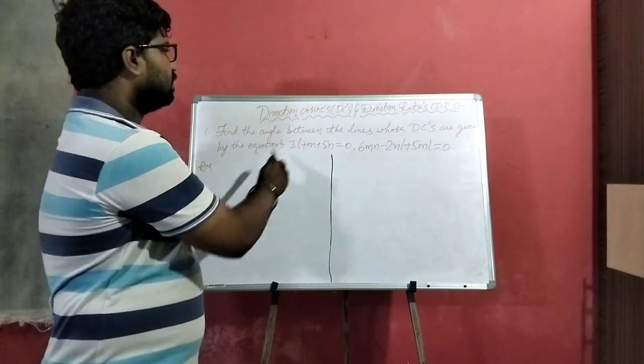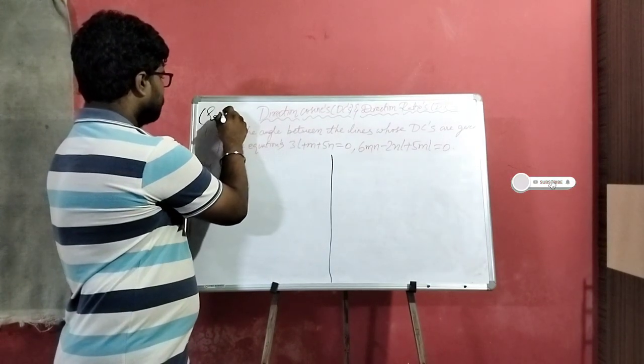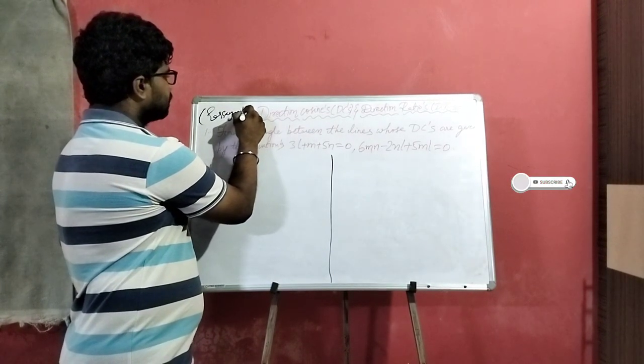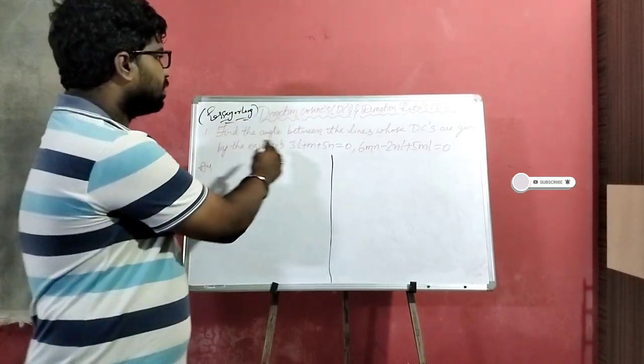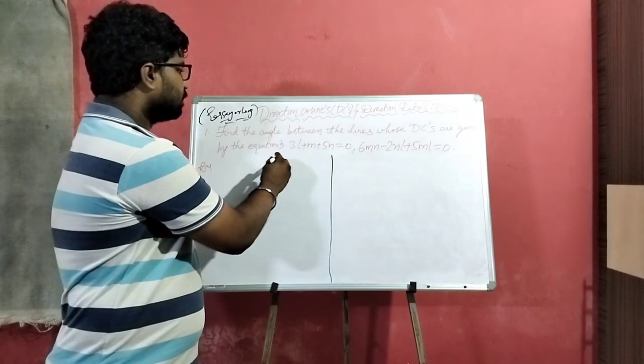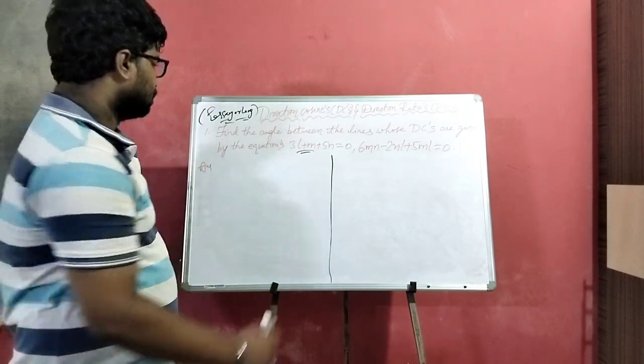Cosines and Direction Ratios, DC's and DR's. Question: find the angle between the lines whose DC's are given by equations. The first equation is 3L plus M plus